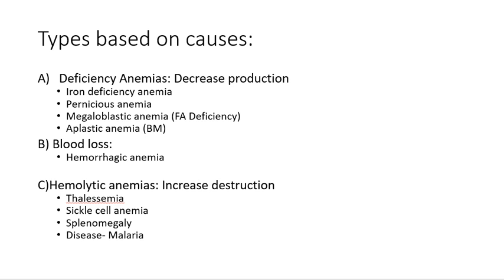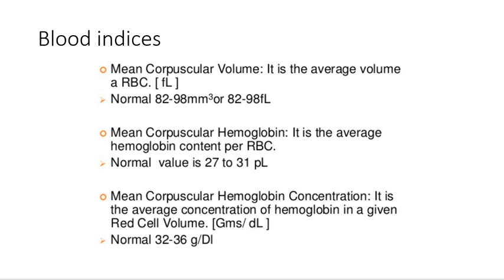Various acute and chronic diseases are also causes of anemia — most importantly chronic diseases. For example, malaria, in which RBCs are directly involved, producing defective RBCs that are lysed by the spleen. Other chronic diseases related to the gut or elsewhere can also cause anemia.